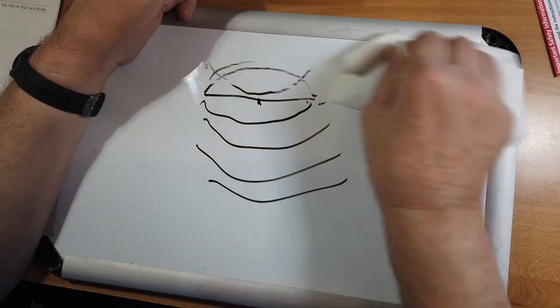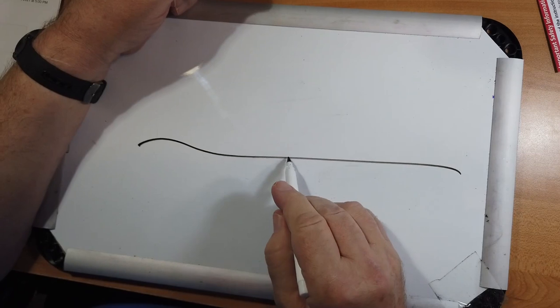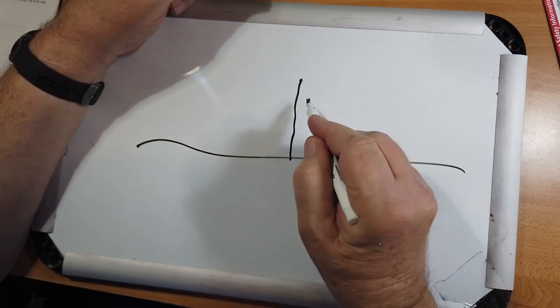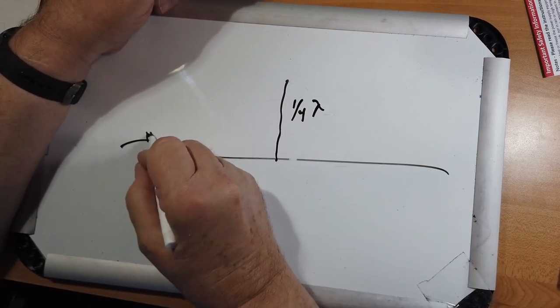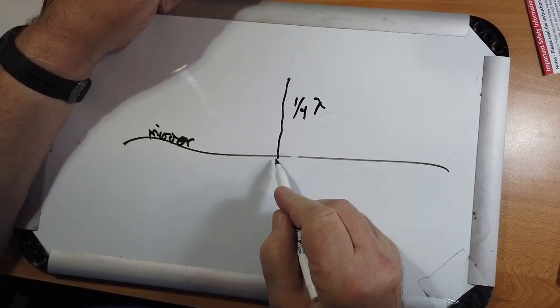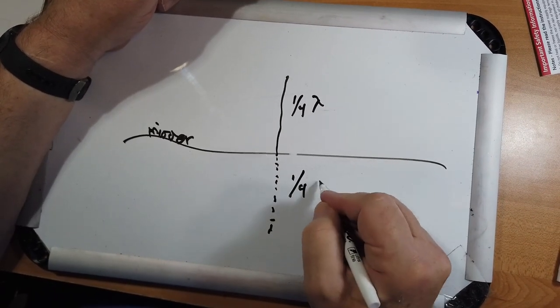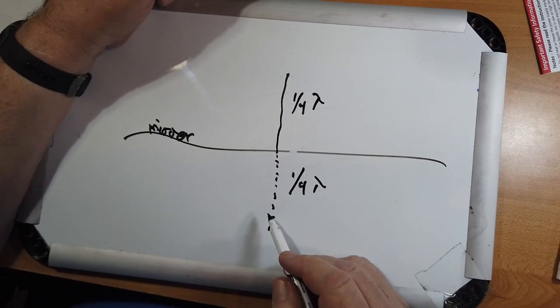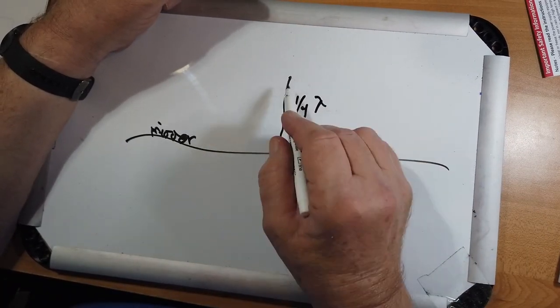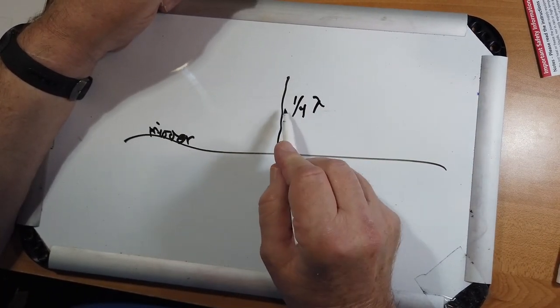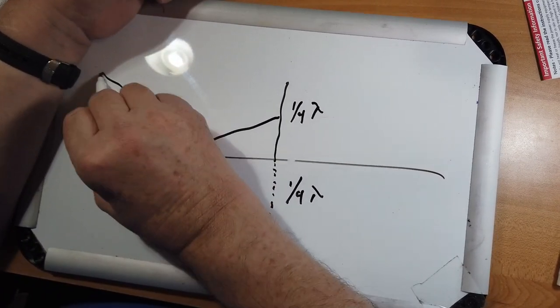Now, where does the quarter-wave come in? The quarter-wave comes in when you're over ground. This would be one quarter lambda. And you can treat the ground as a mirror. And you will see in the mirror the other half of the antenna, virtually.